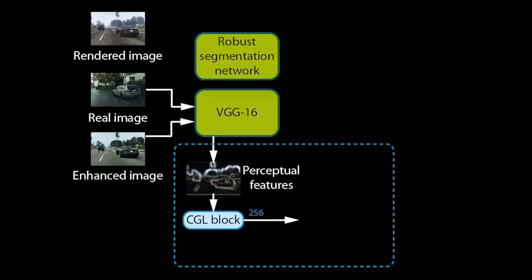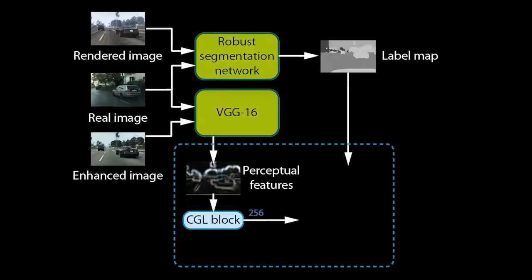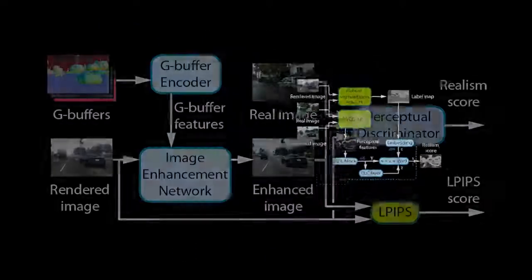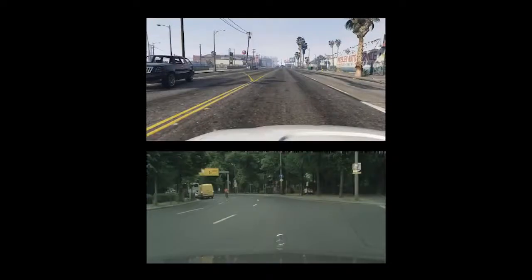We further pass the unmodified rendered image, as well as real images, through the segmentation network to obtain a label map for each. The label map is used to specialize the discriminator on individual object classes. Since we use a pre-trained, robust segmentation network, the object classes are consistent for rendered and real images. For more details, we refer to our paper. There is one more thing.